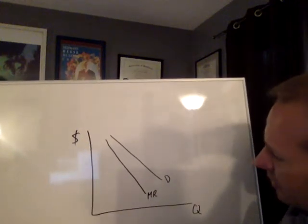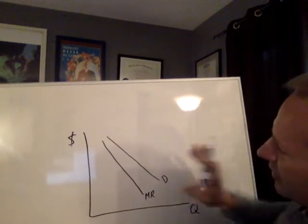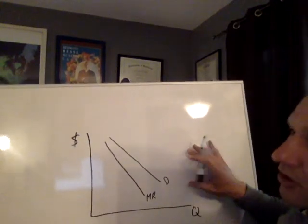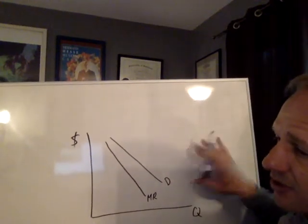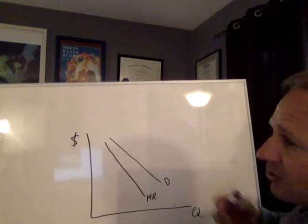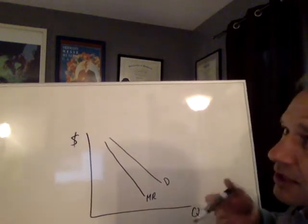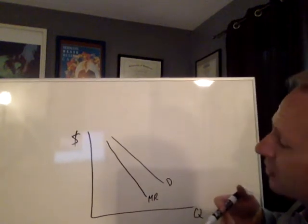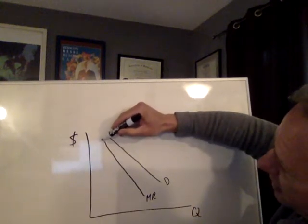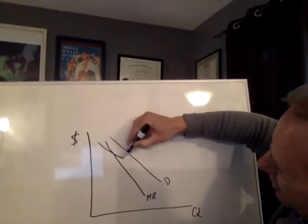This is the monopolist revenue side. The cost structure that firms face is always drawn the same way as the chapter before last. Those curves, if we have those memorized, that would be ideal. I'll start with average total cost, let's say like this.